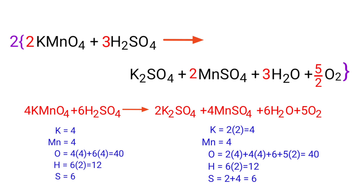The equation is now balanced. There are 4 Potassium atoms, 4 Manganese atoms, 40 Oxygen atoms, 12 Hydrogen atoms, and 6 Sulphur atoms on both sides.